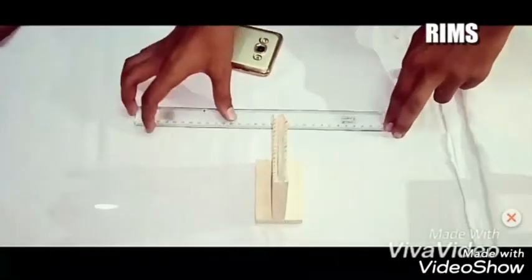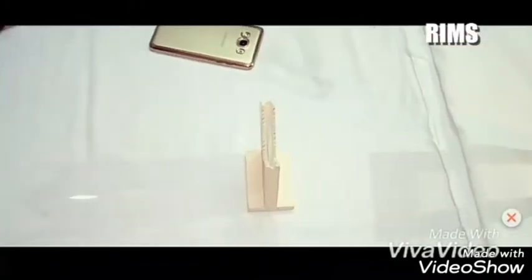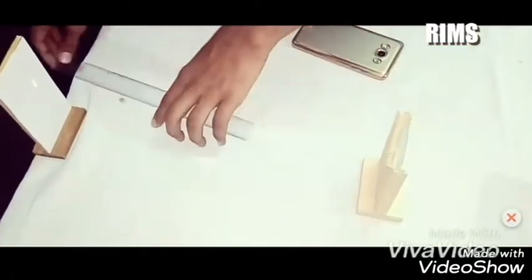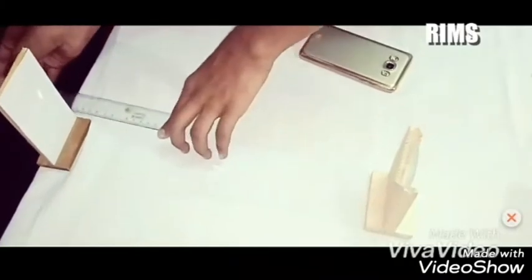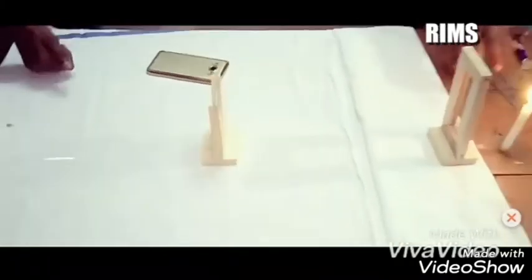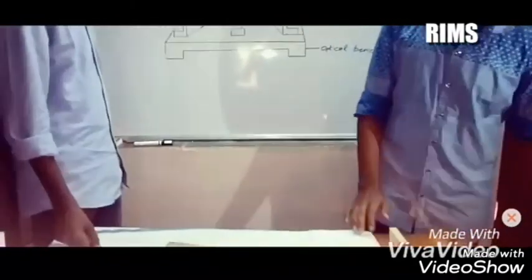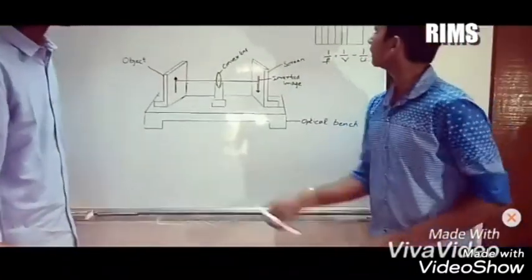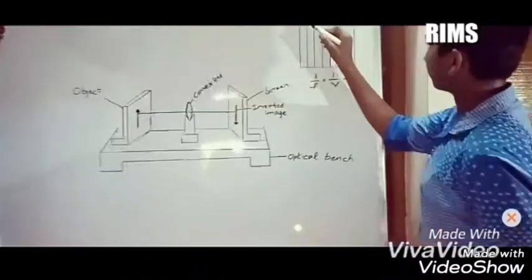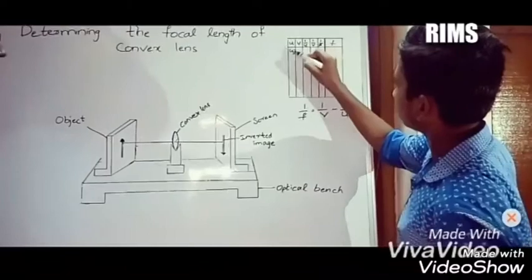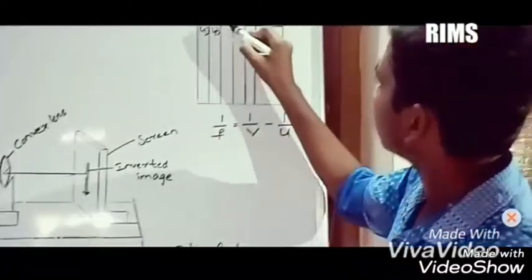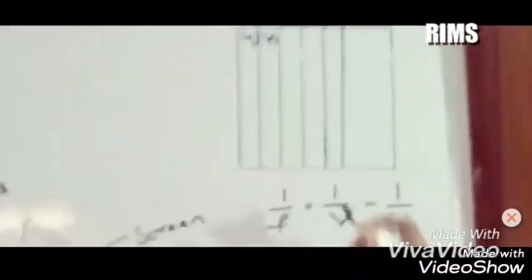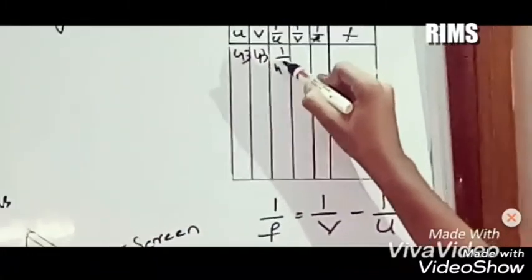Here it is 43 cm and this is also 43 cm. The distance between the object and lens is u, and the distance between lens and image is v. We will substitute the values here. The formula to find the focal length is 1/f = 1/v - 1/u. 1/u value is 1/43, and 1/v value is 1/43.